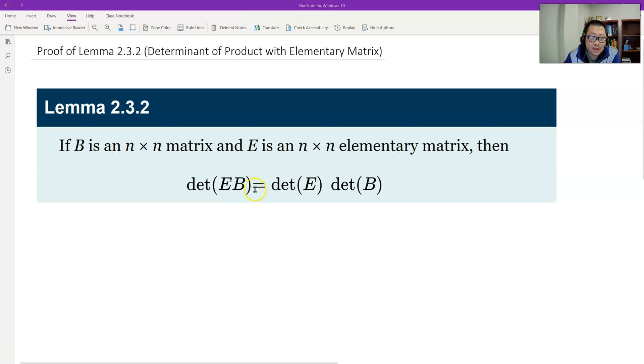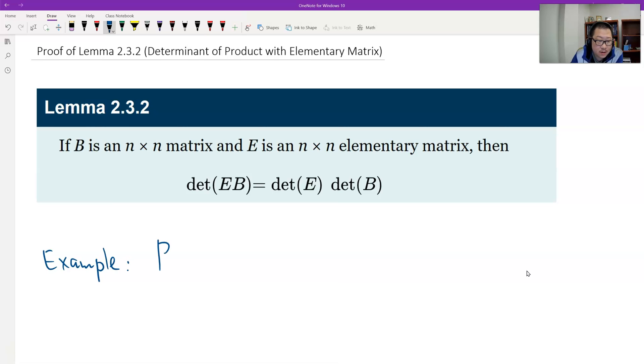It states that the determinant of the product is the product of determinants for the special case where E is elementary. How to prove this? I'll just give examples to show the idea. You can generalize the idea to any matrix. I'll set up B as 3 by 3, general.